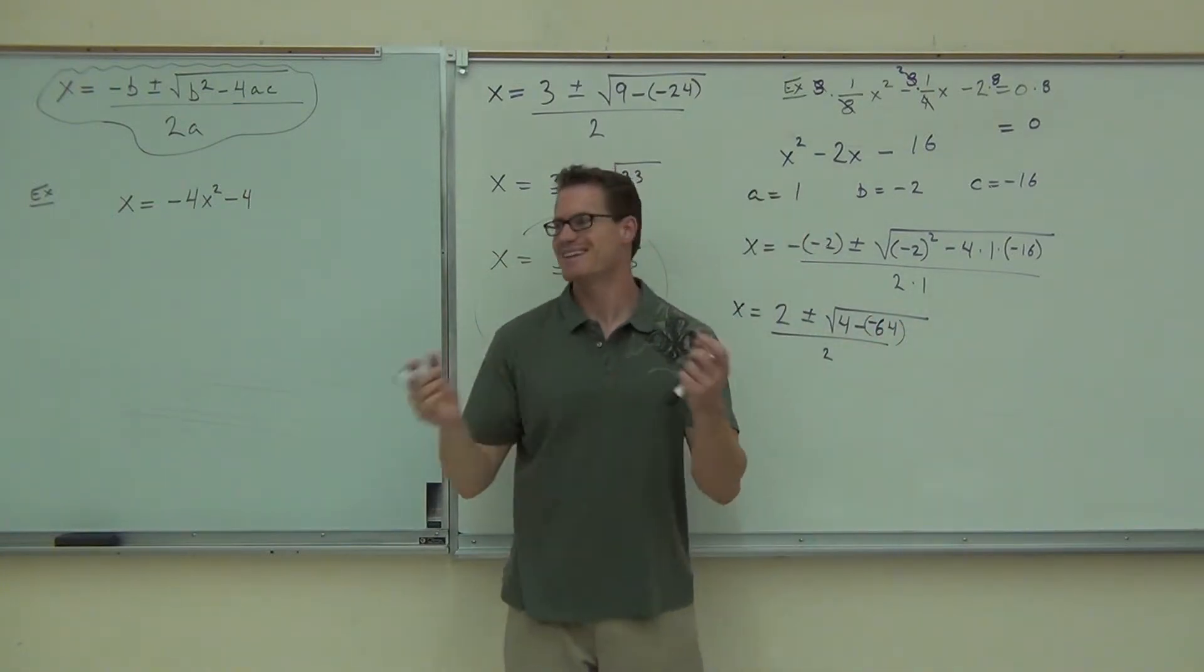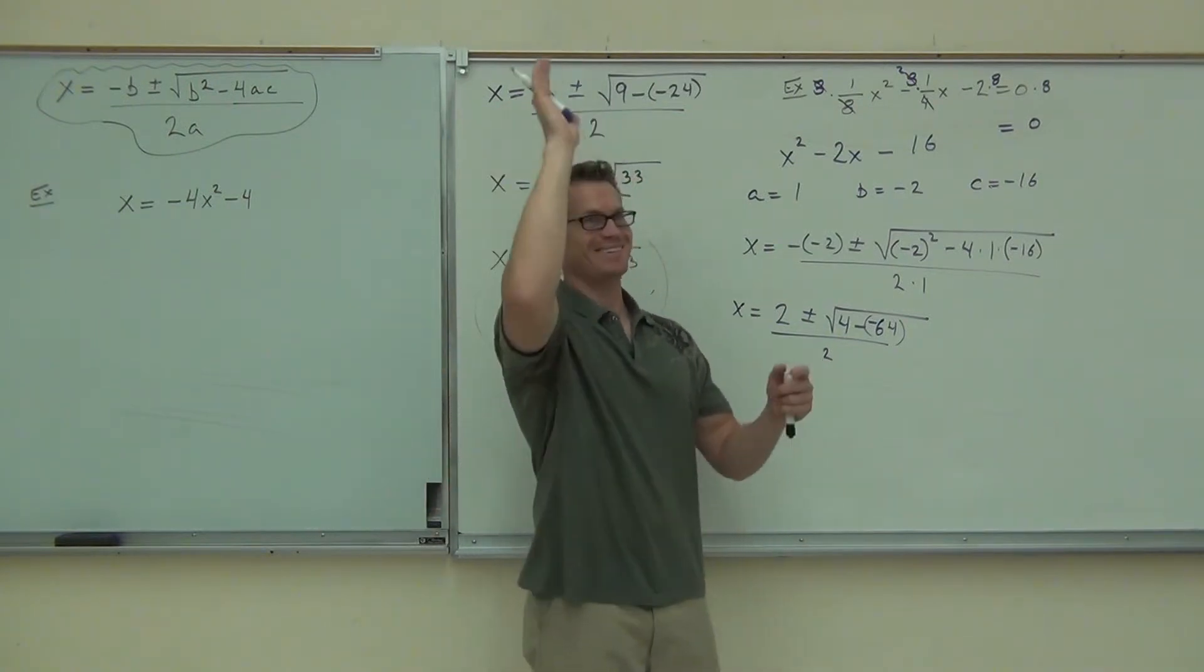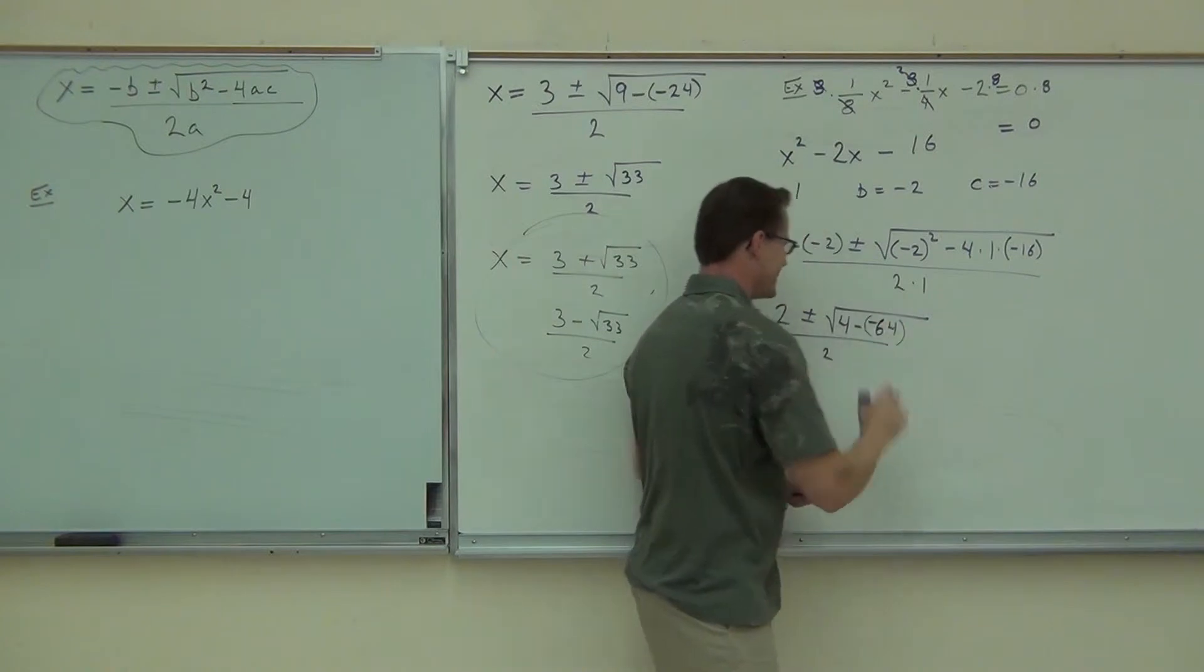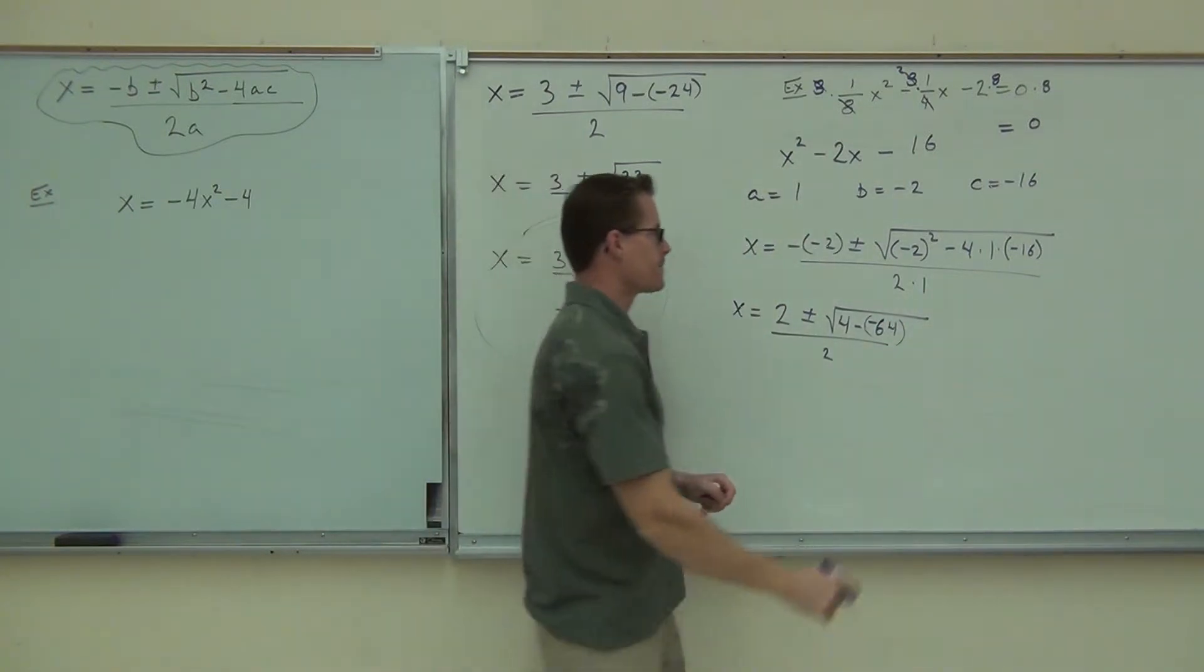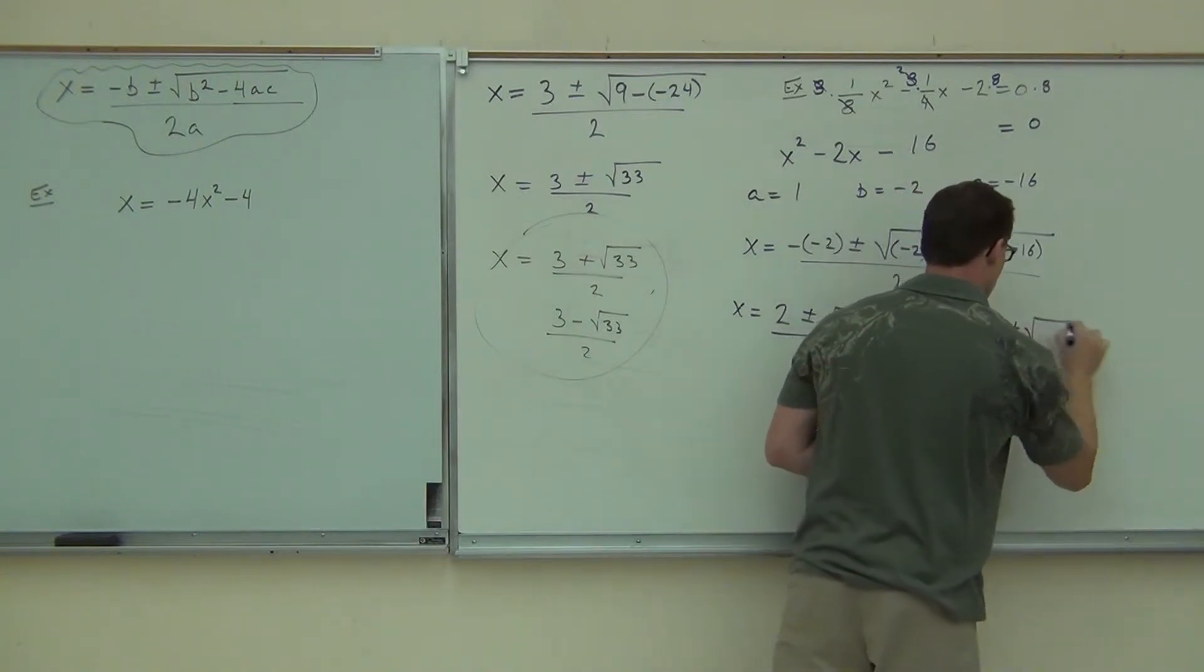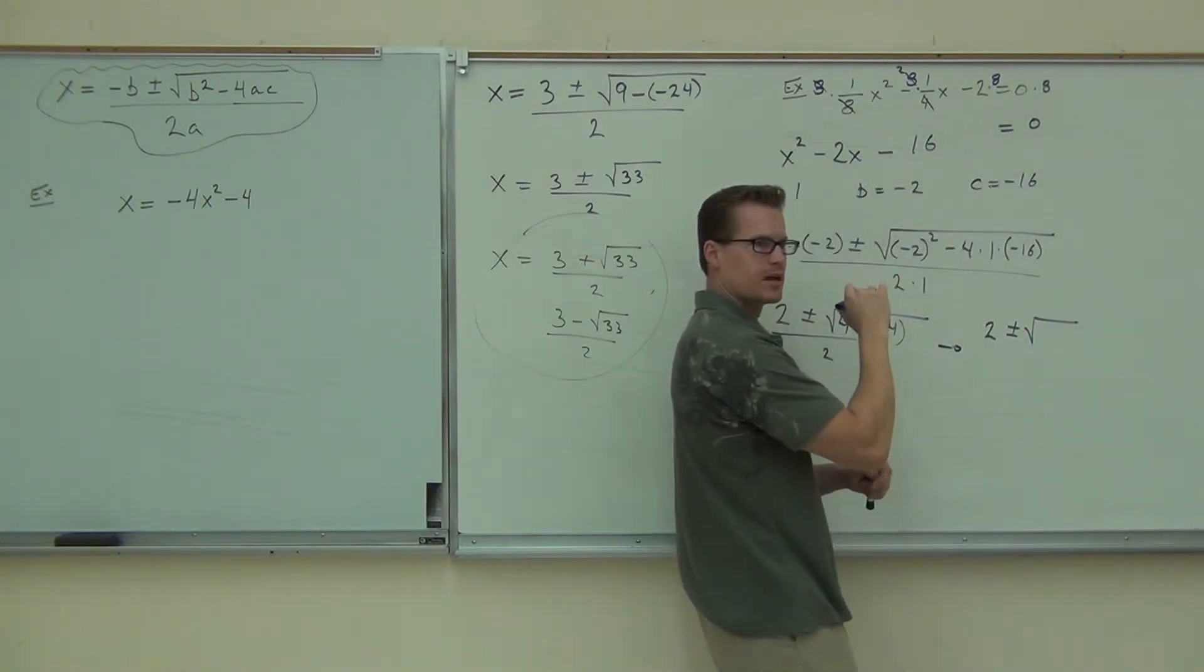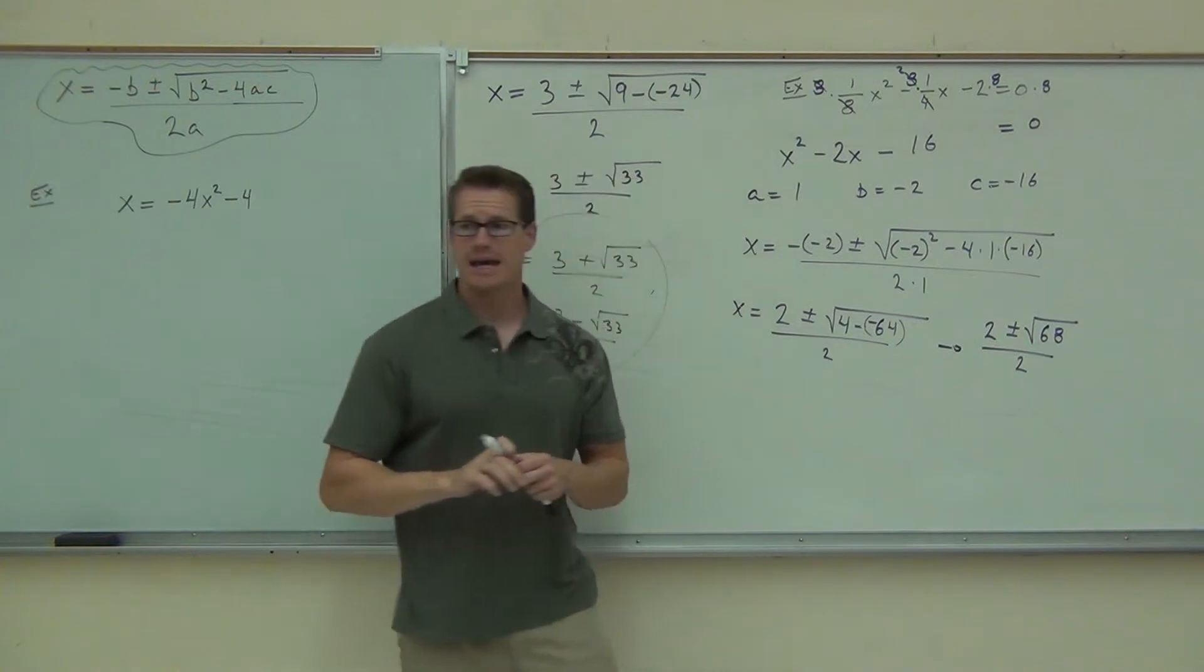With parentheses? Fantastic. It's even better. Four minus negative 64. True? Yeah. Well, that's going to give us two plus or minus the square root of, how much is inside my radical? 68.